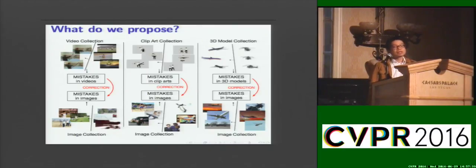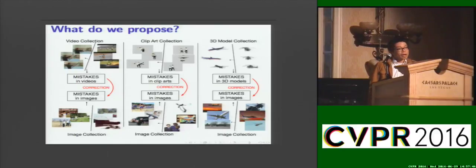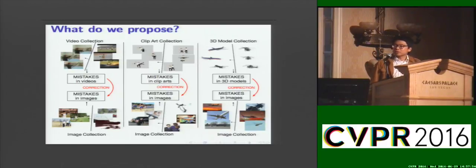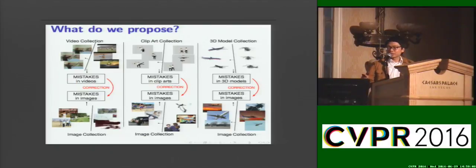Specifically, we want the computer to solve vision tasks on images based on knowledge in the form of mistakes committed in other datasets when learning the same concept. In these three visualizations: we learn an image classifier based on mistakes in video data, based on mistakes in clip art data, and based on mistakes in 3D model data.